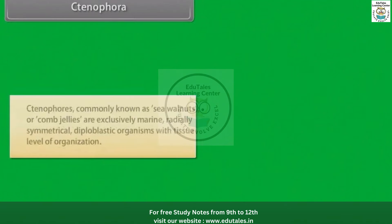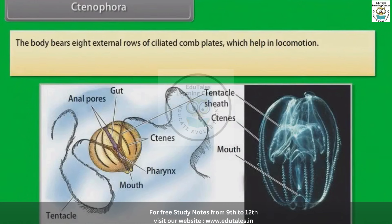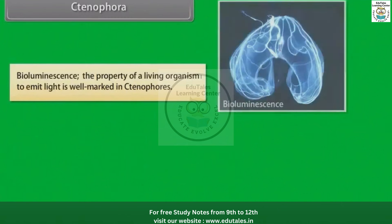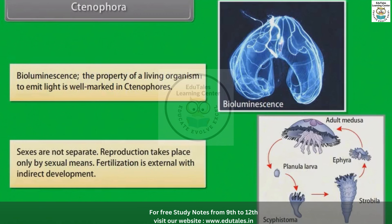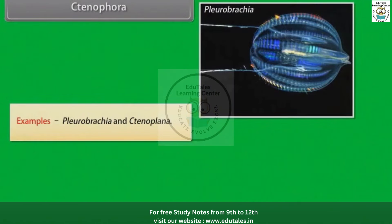Ctenophora: Ctenophores, commonly known as sea walnuts or comb jellies, are exclusively marine, radially symmetrical, diploblastic organisms with tissue level of organization. The body bears eight external rows of ciliated comb plates which help in locomotion. Digestion is both extracellular and intracellular. Bioluminescence — the property of a living organism to emit light — is well marked in ctenophores. Sexes are not separate; reproduction takes place only by sexual means. Fertilization is external with indirect development. Example: Pleurobrachia and Ctenoplana.